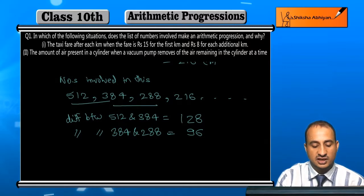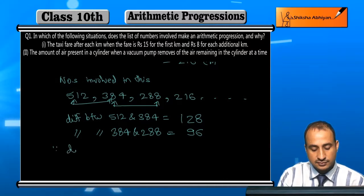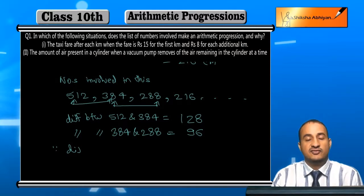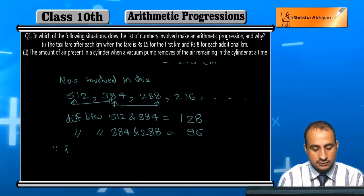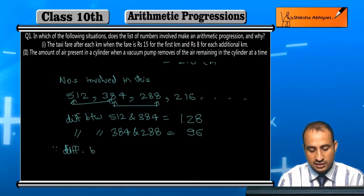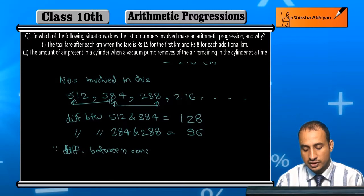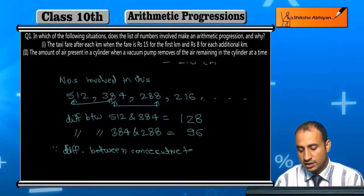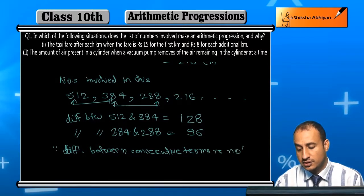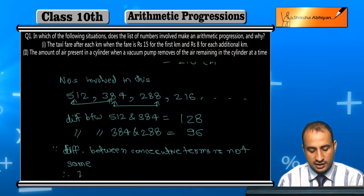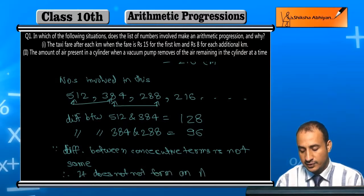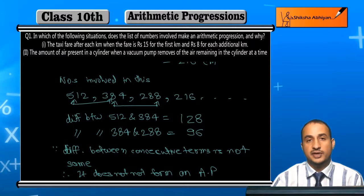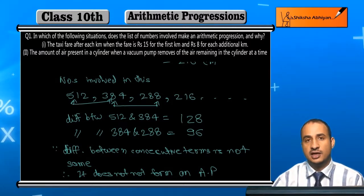Since the difference between consecutive terms is not the same, therefore it does not form an AP. This is not an arithmetic progression. So these are the first two parts of the question answered. Now the third part of the question is next.